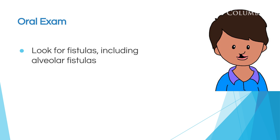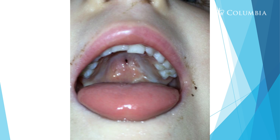In Module 3.1, we look specifically at how to do an oral exam and that speech assessment. It's important to do an oral exam to check the oral structure and function of the oral cavity. First, you should look for any fistulas, including alveolar fistulas. In this child, you see a little small fistula in the palate. It's not a cleft palate — it's just a fistula. The cleft was repaired and then the seams opened, resulting in this fistula.